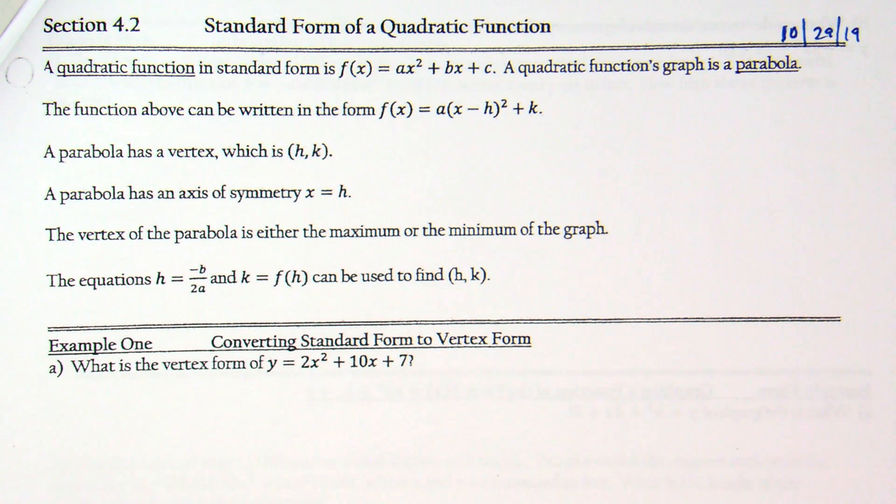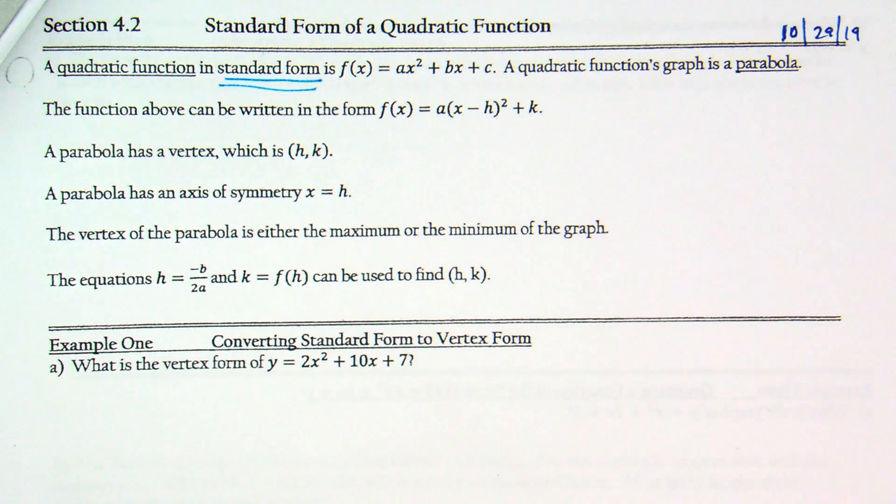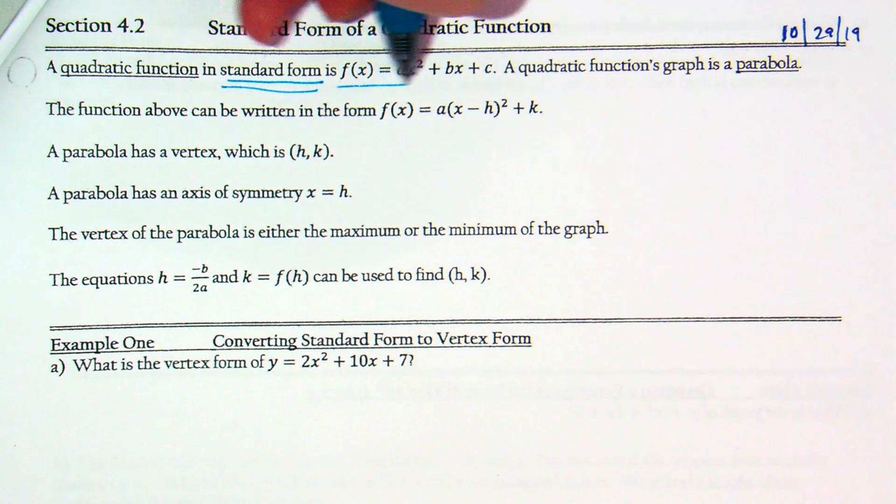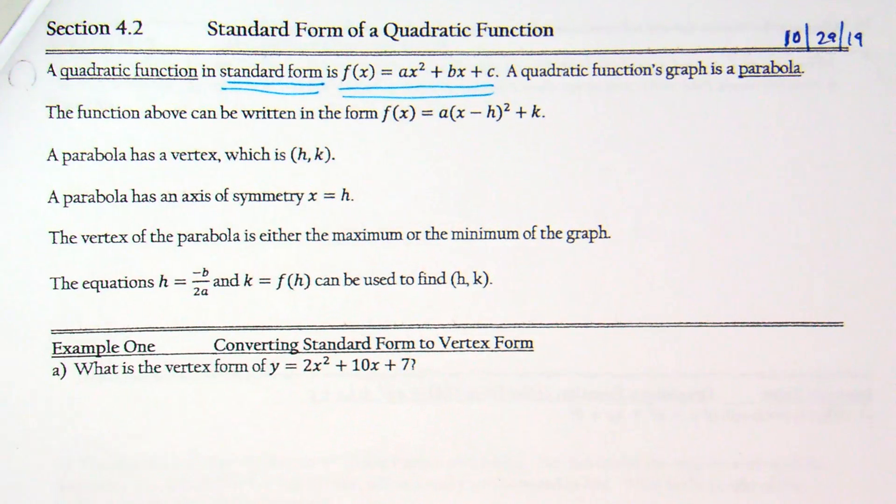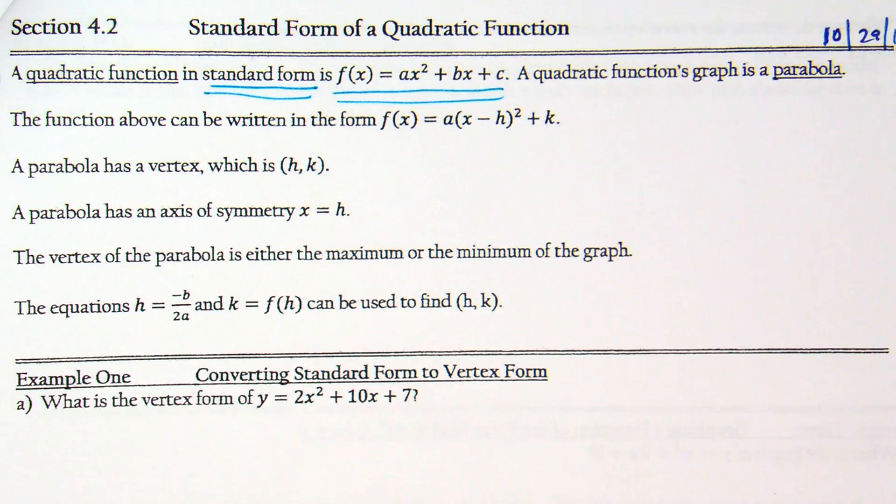We're doing that A times x minus h squared plus k. Now we're going to focus more on the standard form. You'll notice a quadratic function in standard form is f of x equals A x squared plus B x plus c. That's the form we go to when we're trying to factor or use quadratic formula.